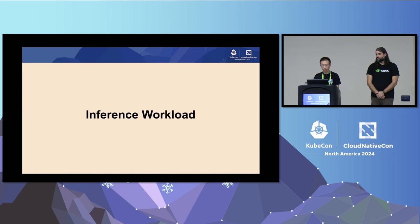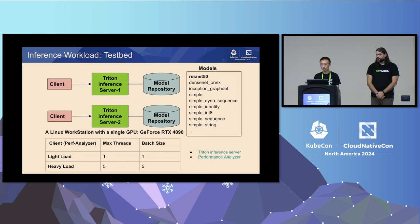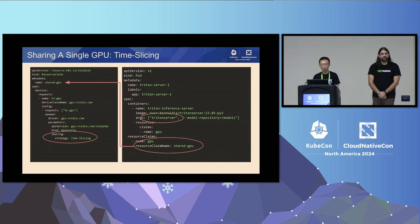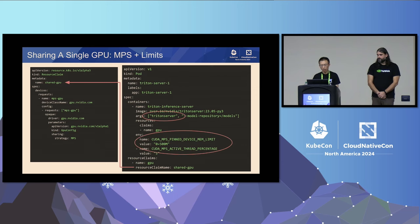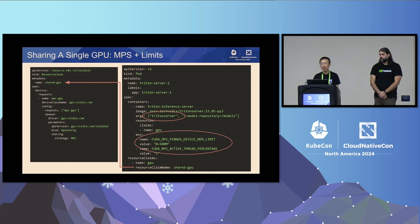For the inference workload setup, NVIDIA Triton Inference Server was used with two instances. A performance analyzer client generates requests at different rates to simulate demand on the inference server. Using the DRA resource claim, as Kevin showed, you specify the sharing strategy in your pod spec. The study looks at time slicing, MPS, and MPS with resource limits — using application environment variables to limit compute and memory resources.